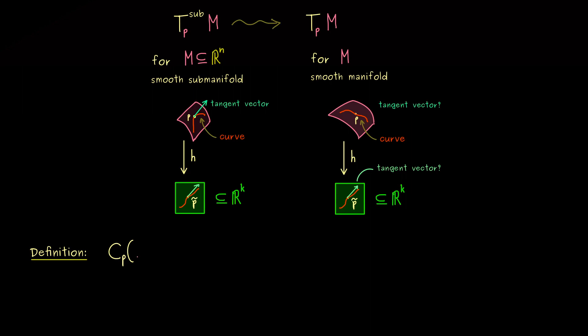Let's define the set of curves on M through the point P. For the moment, this will be C_p(M) and it's a whole set. So let's consider curves gamma defined on a small interval around 0, so minus epsilon to epsilon. And this is mapped into the manifold M. And here please keep in mind, M could be a very abstract smooth manifold. And now the only condition we need for these curves, is that they are differentiable and go through the point P.